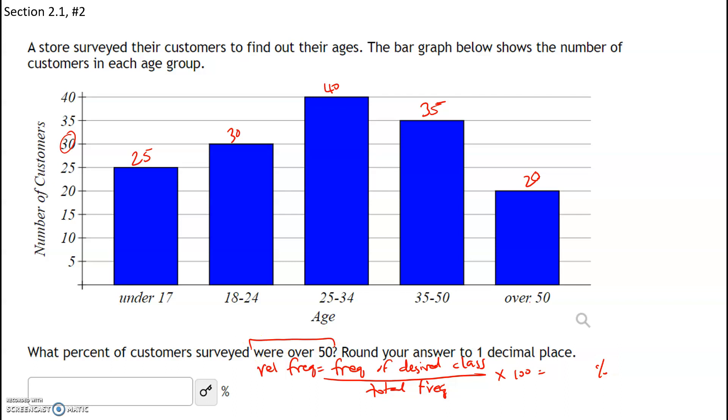The first thing we're going to do is figure out what is the frequency of the desired class, the class that's over 50. And that frequency is going to be 20. So the relative frequency is going to be 20 divided by the total frequency.